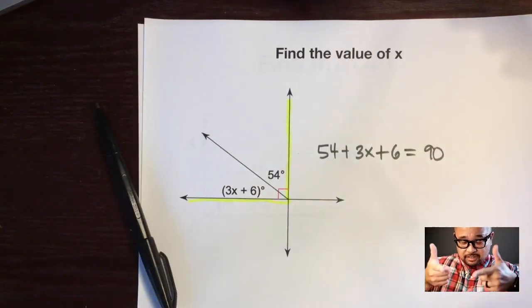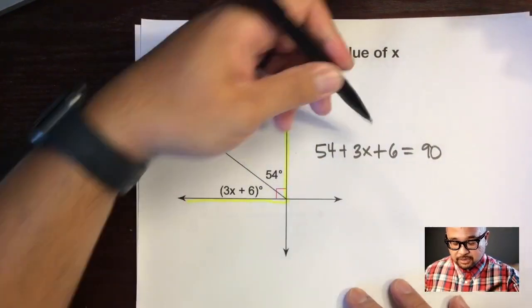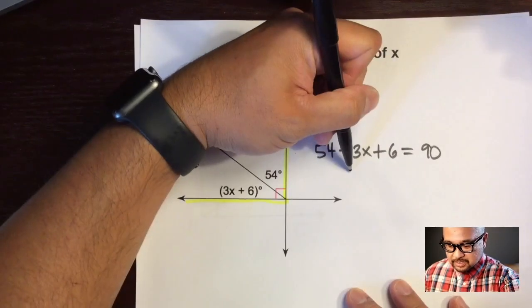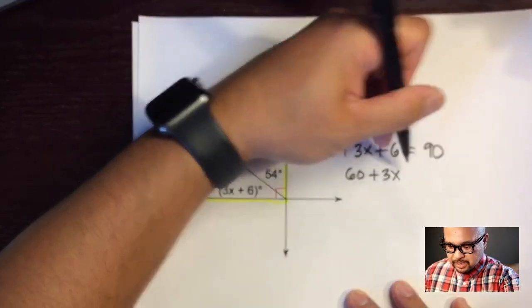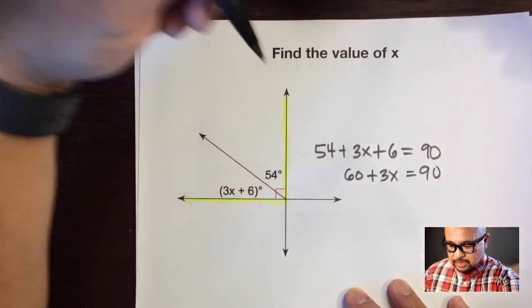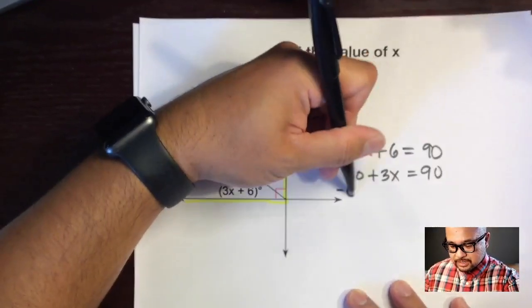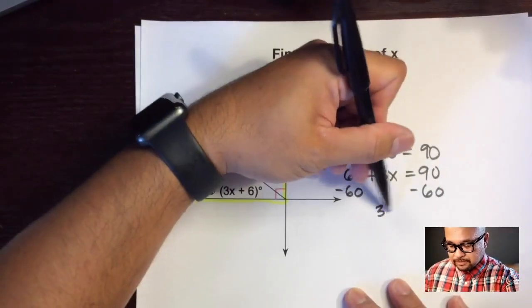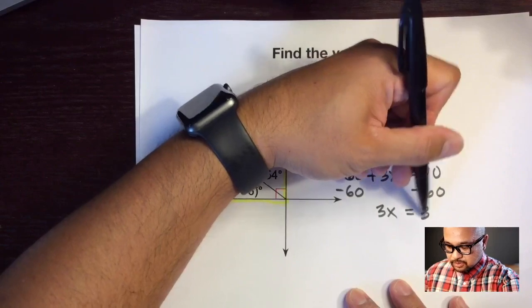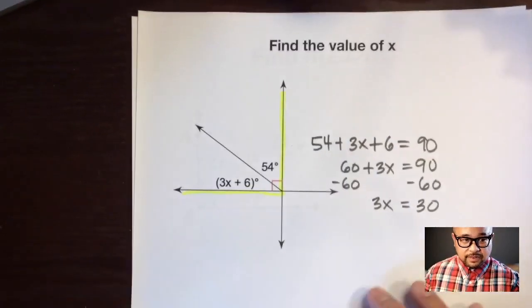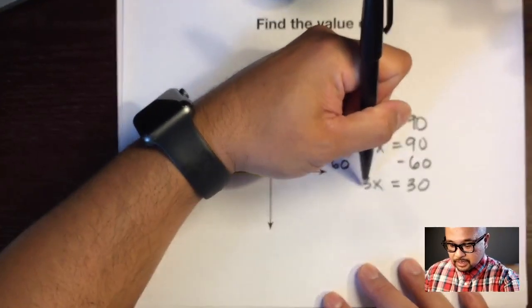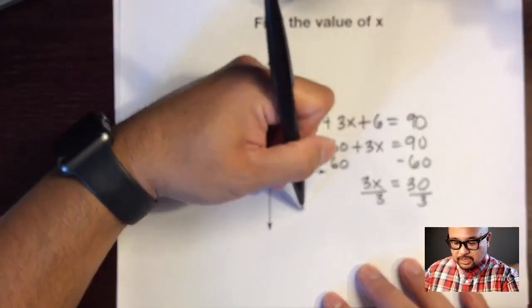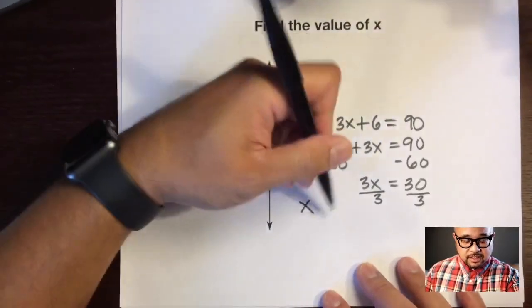Let's combine like terms. 54 plus 6 is 60, plus 3x is equal to 90. We'll subtract 60 from both sides and we'll have 3x is equal to 30. The very last step: this is 3 times x, the opposite of multiplication is division, so x is equal to 10.